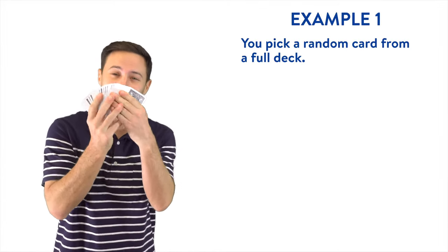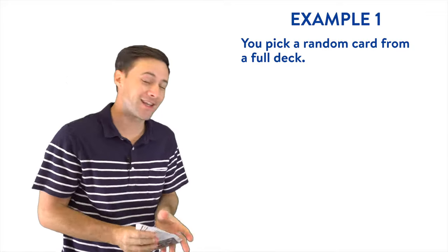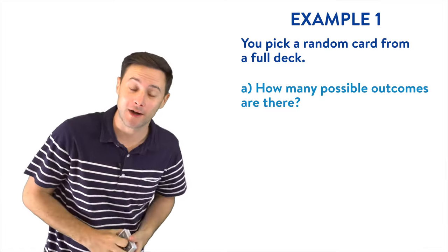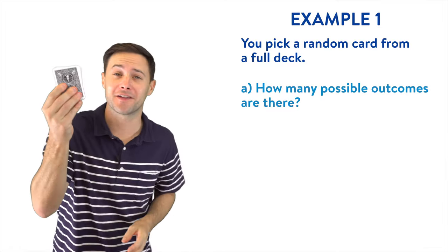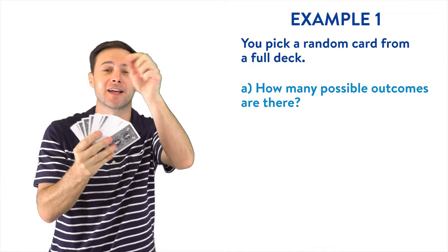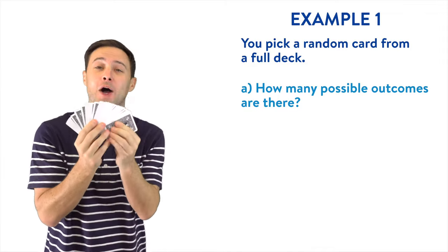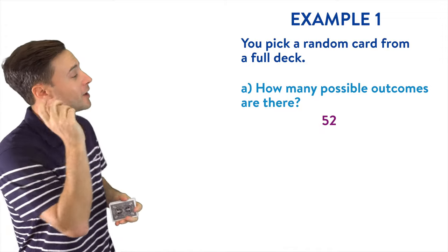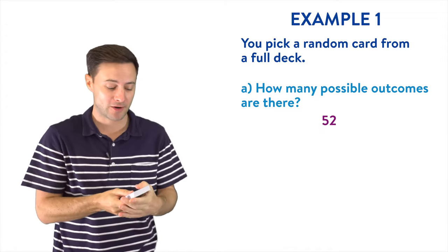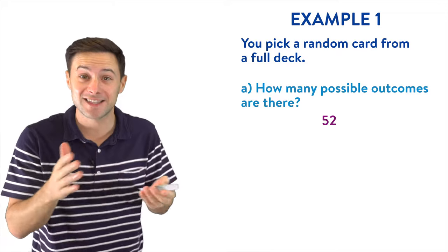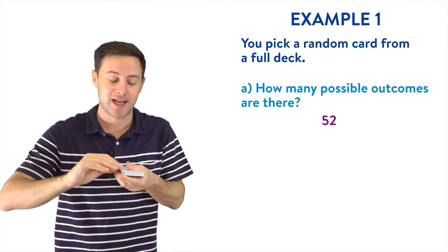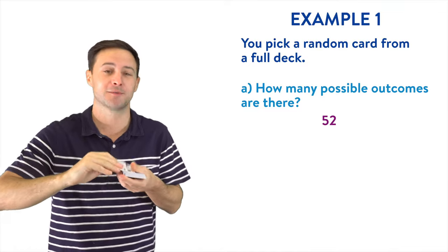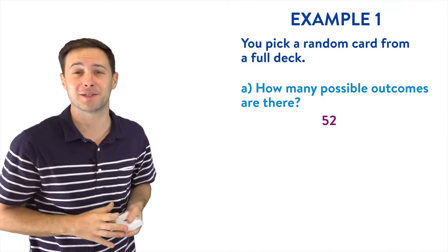Okay, so we are picking a random card from a full deck, like we said before. So first question is, how many possible outcomes are there? Well, how many cards are there, right? Each one is equally as likely to get chosen. So how many playing cards are there? And the answer to that, if you remember, is 52. So there are 52 total possible outcomes. If we wanted to list each possible outcome, we would have to list every single card. So we would say ace of clubs, two of clubs, three of clubs, four of clubs, those are all the possible outcomes.